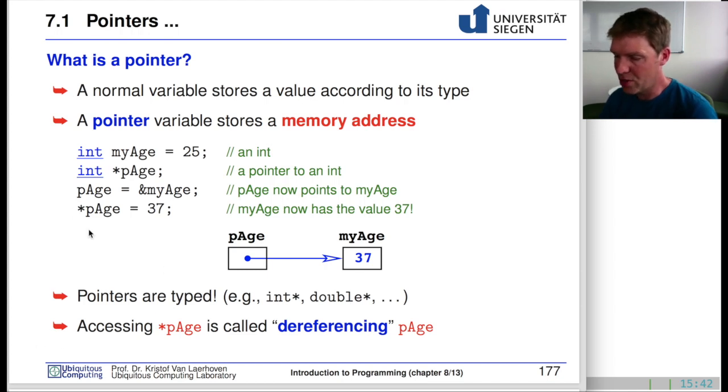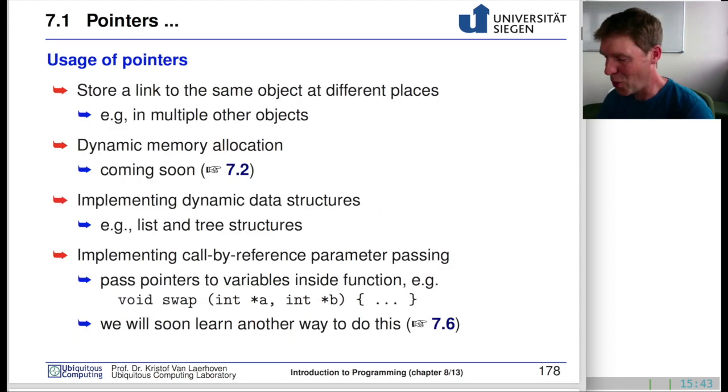Accessing the pointer, or dereferencing the pointer - accessing the value that this pointer is pointing towards - can be done with the star afterwards. The way you define a pointer is like this. The way you deal with a pointer is like this. And the way you get to the value is like that. This is something you'll have to get used to, because it is so important for the future of this course.